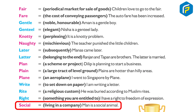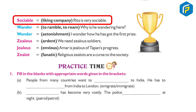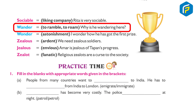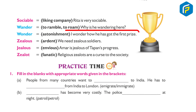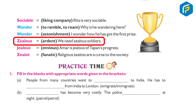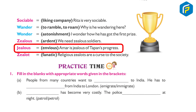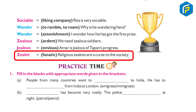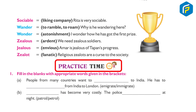Right: something you are entitled to — 'I have a right to freedom of expression.' Social: living in a community — 'Man is a social animal.' Sociable: liking company — 'Rita is very sociable.' Wander: to roam — 'Why is he wandering here?' Wonder: astonishment — 'I wonder how he got the first prize.' Zealous: ardent — 'We need zealous soldiers.' Jealous: envious — 'Ammar is jealous of Tapan's progress.' Zealot: a fanatic — 'Religious zealots are a curse to society.'